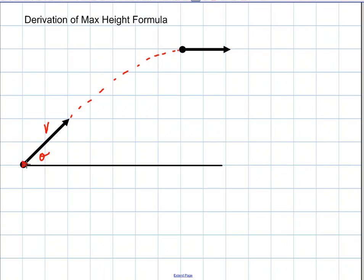Well the first thing we want to do is draw our components again. We have the x, we have the y, they're equal. And so we have V initial y equals V sine theta, and then we have V initial x equals V cosine theta.